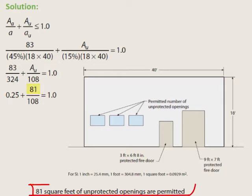81 square feet, therefore, is the maximum area of unprotected openings permitted in this example based on the area of protected openings that has already been specified.